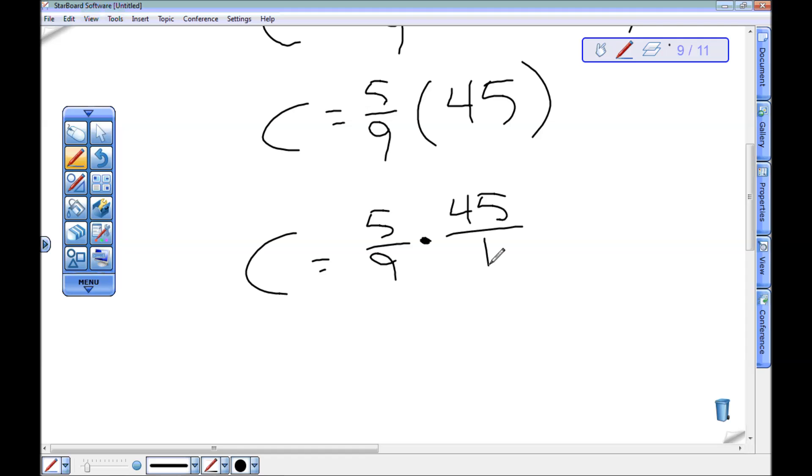When I'm multiplying fractions, I multiply straight across, but before I do, I can cancel if I have the right numbers to do so—if I have something that shares a factor in the numerator and denominator. I can see that 45 and 9 share a factor of 9.